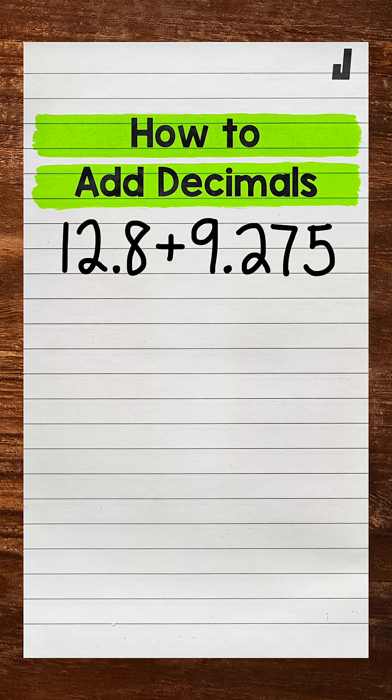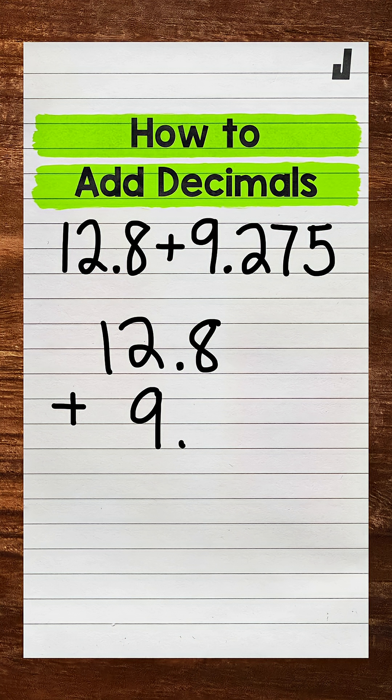Now the first thing that we need to do when adding decimals is set the problem up by lining up the decimals. So 12 and 8 tenths plus 9 and 275 thousandths.